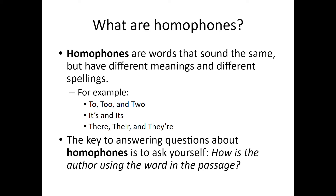If you notice, they each have different spellings and they also have different meanings. It's and its — one has an apostrophe because it is a contraction. Then you have there, their, and they're.